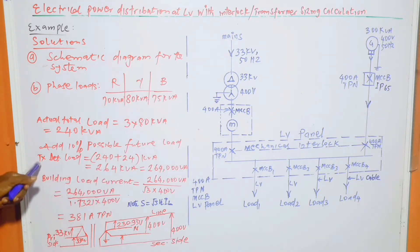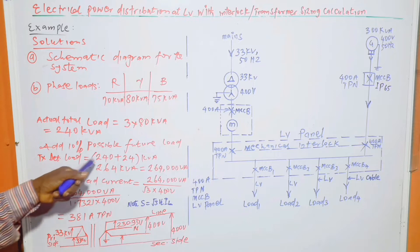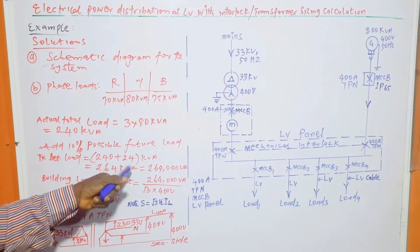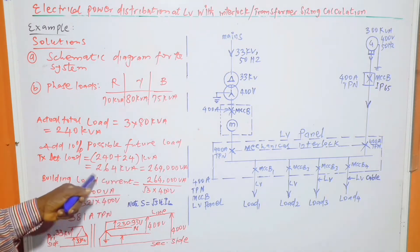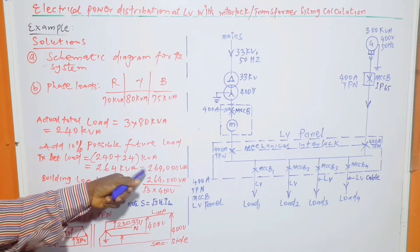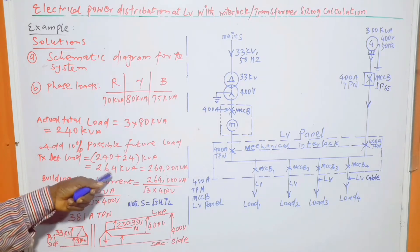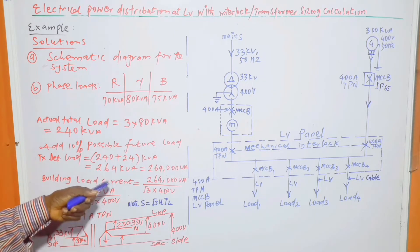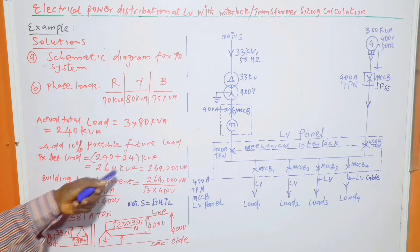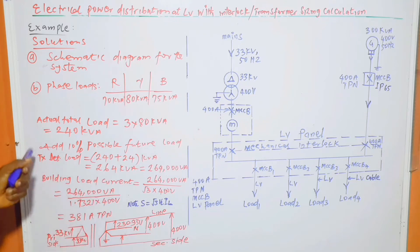Now, add 10% possible future load, then transformer rating determining load is equal to 240 plus 24 kVA, which is equal to 264 kVA or 264,000 VA. So this is the building load, 264 kVA, which is the answer to part B.